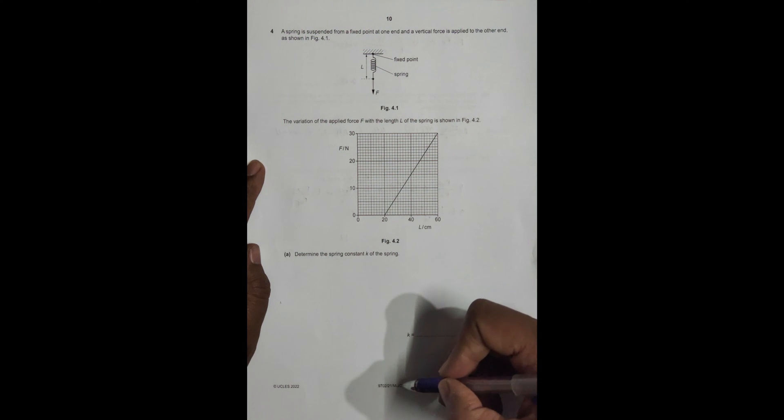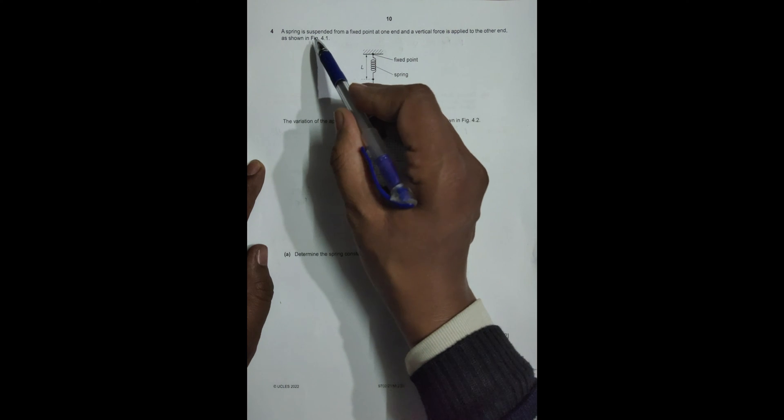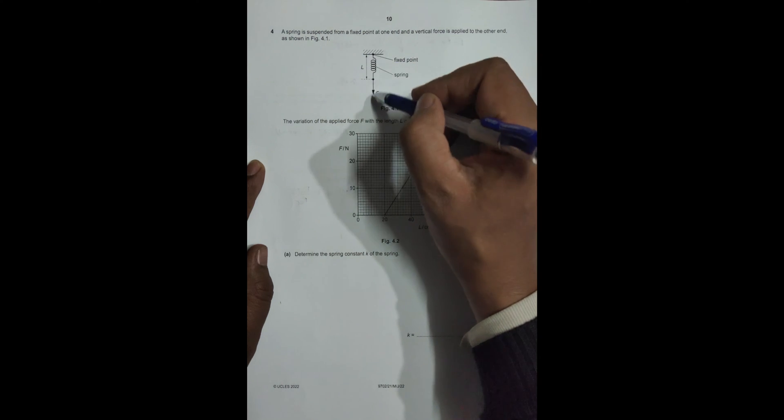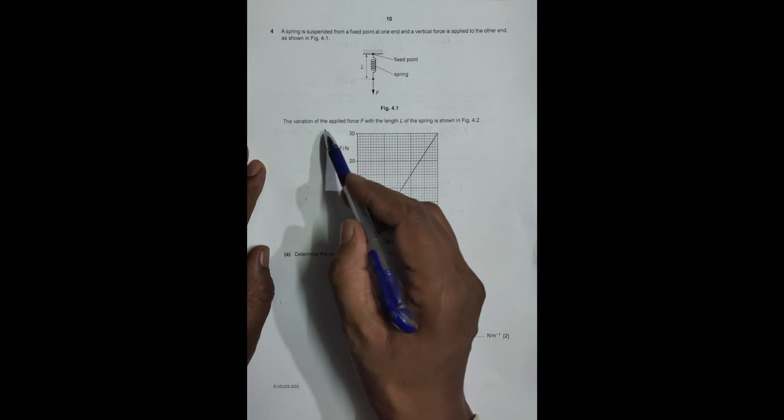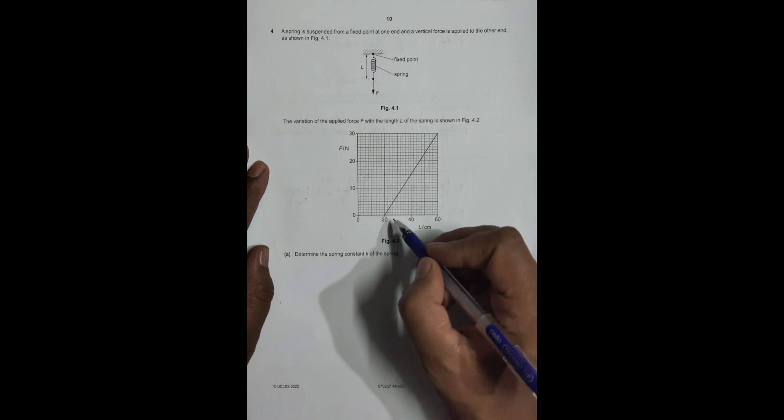Hello folks, this is 2022 May June Paper 21, question number 4. This question is concerned with the elastic properties of matter. A spring is suspended from a fixed point at one end and a vertical force is applied to the other end, as shown in Figure 4.1. The variation of the applied force F with the length L of the spring is shown. When force was 0, it is 20 cm, so that means the original length of the spring was 20 cm. This shows the final lengths.